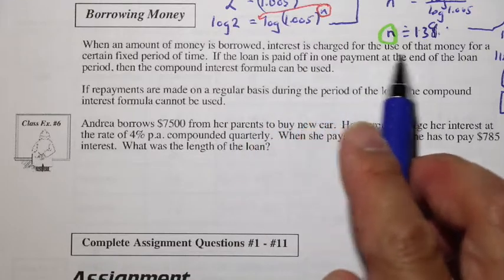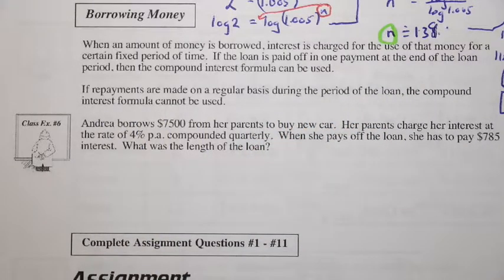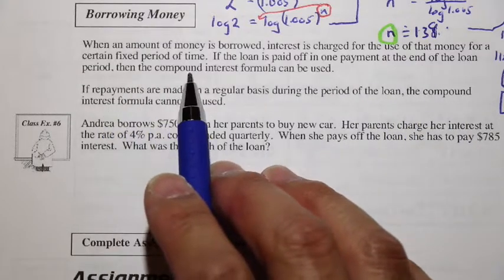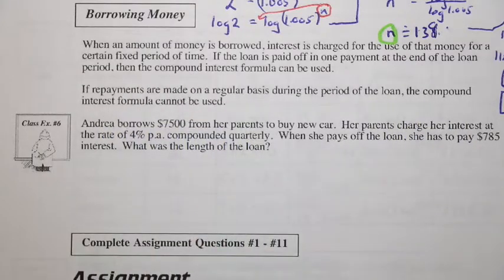So interest is charged for the use of that money for a certain fixed period of time. If the loan is paid off in one payment at the end of the loan period, then we can talk about the compound interest formula being used.